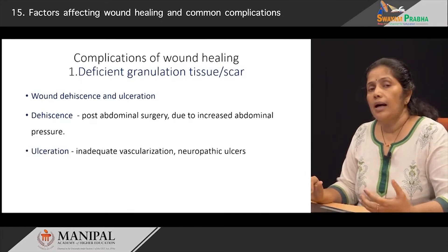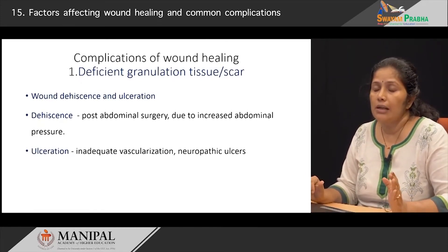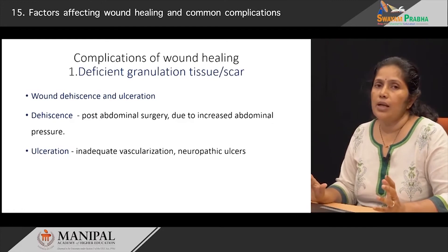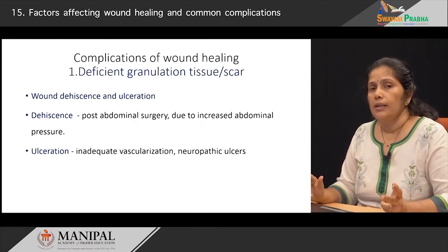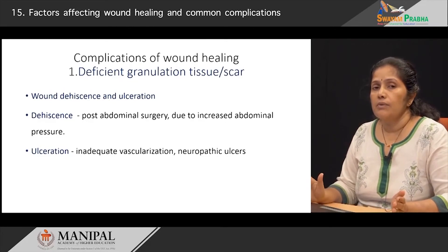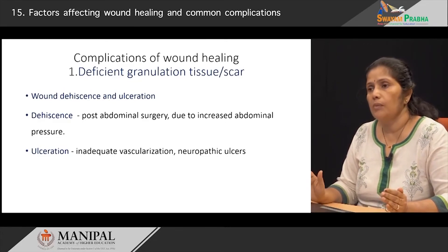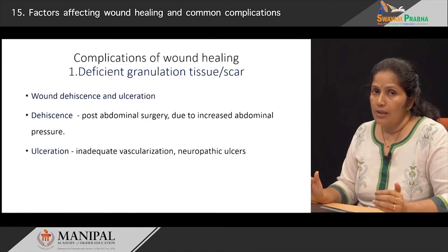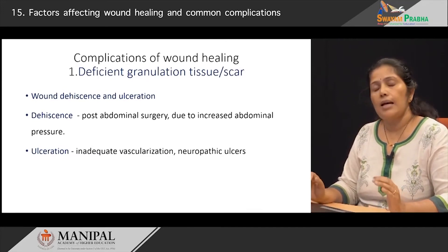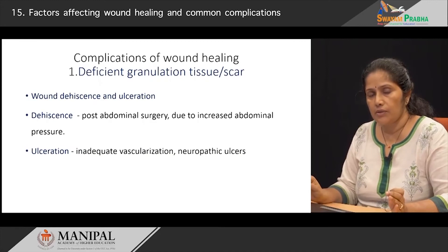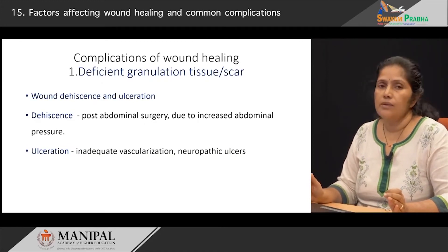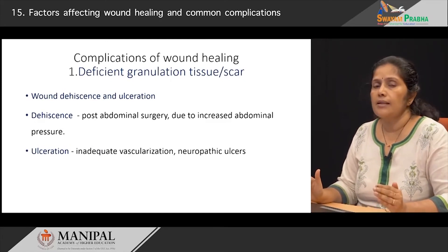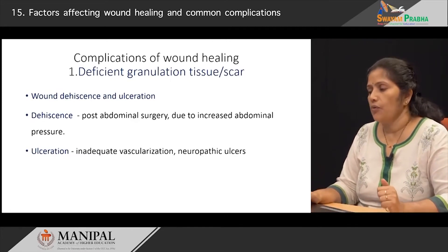Why does ulceration occur? Ulceration usually occurs when there is inadequate vascularization — that is, there is not enough vascularity for the wounds to heal. The second reason where ulceration can occur is when the patient is having certain neural problems, as you can see in leprosy patients or in patients who have spinal cord injury. We call these ulcers neuropathic injuries, where there is decreased sensation and the patient does not realize when there is repeated injury. In both these conditions, we can see ulcers that will not heal very fast.